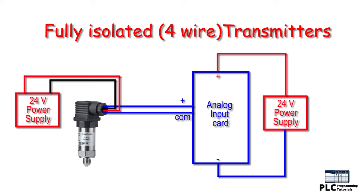The disadvantages for this type of connection are that a 4-core cable is required instead of a 2-core cable, and a separate power supply is needed for both the transmitter and the control panel.